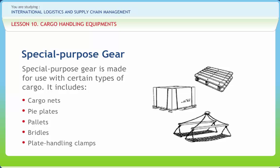A spreader is any device used to keep the side pressure of the sling legs away from the load being hoisted. Bridles are lifting devices designed to hoist special types of cargo and may be used in conjunction with spreaders. Pallet bridles are used for quick, efficient handling of palletized cargo. Beam bridles are used to remove hatch beams from their sockets. Vehicle bridles are used for efficient handling of various types of vehicles. Heavy-duty bridles are used to reduce side pressure on heavy lifts. Plate handling clamps are designed exclusively for handling steel plates.